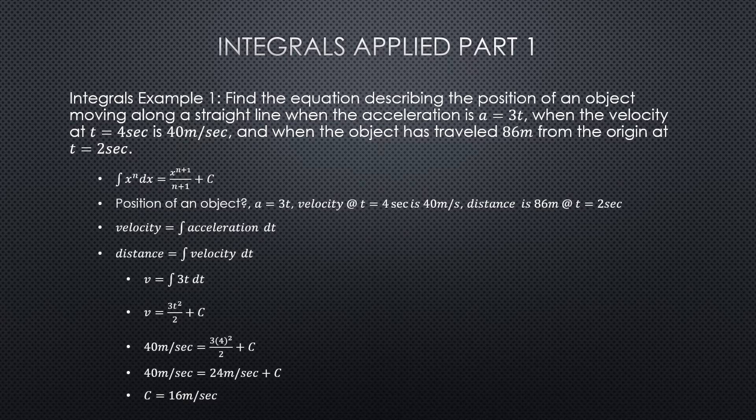Let's say we have a question like this: find the equation describing the position of an object moving along a straight line when the acceleration is a equals 3t, the velocity at t equals 4 seconds is 40 meters per second, and the object has traveled 86 meters from the origin at t equals 2 seconds. There is a lot of information in that question. They're asking for the position of an object, they tell us acceleration equals 3t, and that velocity at 4 seconds is 40 meters per second.